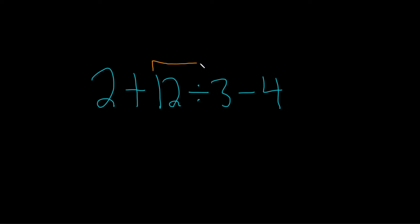So right here you see that we have 12 divided by 3, so the first thing we want to do is deal with that. Then we'll worry about the addition and subtraction. So we'll bring down the 2, we'll bring down the plus, and then 12 divided by 3 is equal to 4, and then you have the minus 4.